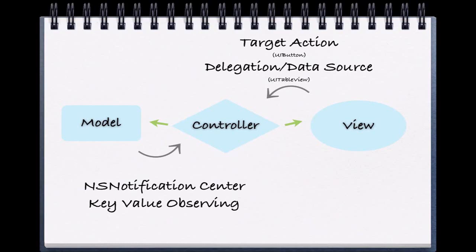So how does the view communicate with the controller? When our button is pressed, which is a view object, our view controller did something. Specifically, it executed the code within the curly braces of our target action method. This communication from the view to the view controller is always blind.